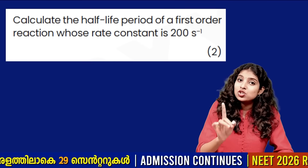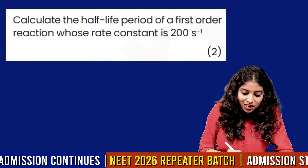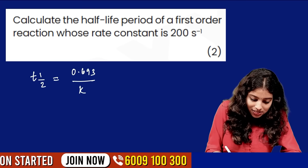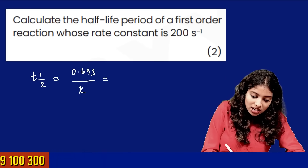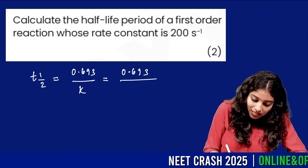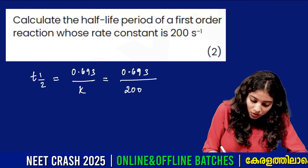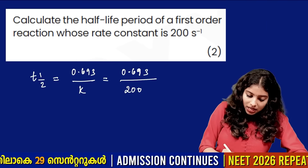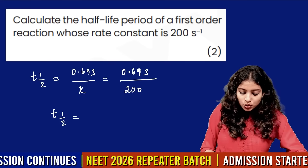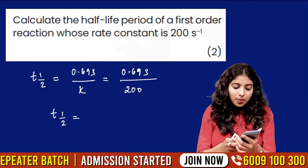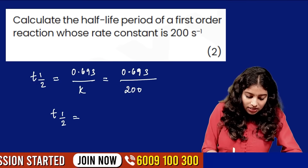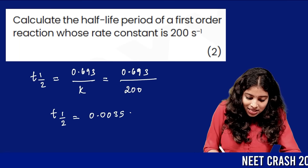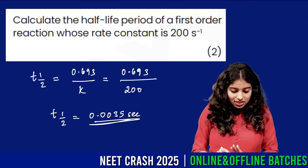Calculate the half-life. For a first-order reaction, t½ is equal to 0.693 divided by k. Substituting k = 0.0035, we get t½ = 0.693 / 0.0035 seconds.